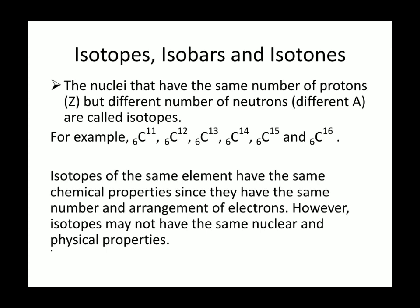Here carbon have the same number of protons, but it has different number of neutrons, that is 5, 6, 7, 8, 9, and 10 respectively. And isotopes of the same element have the same chemical properties, since they have the same number and arrangement of electrons, because electrons take part in chemical reactions. However, isotopes may not have the same nuclear and physical properties.